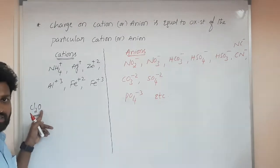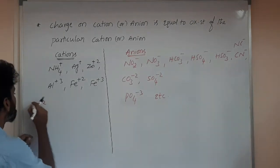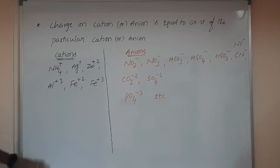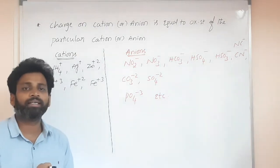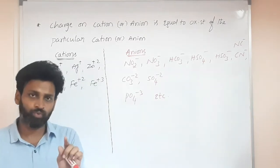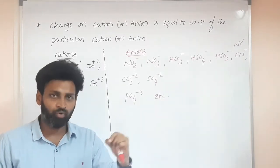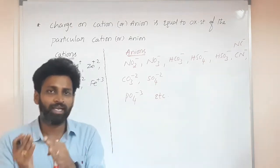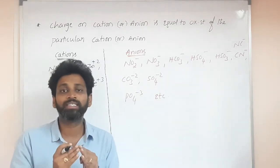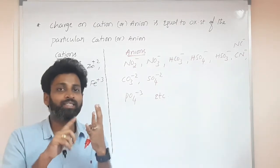Oxygen's electronegativity value is 3.5, so oxygen has a minus two oxidation state, and each chlorine in Cl₂O has plus one. The general oxidation state of oxygen is minus two, because for elements from group five onwards, it is group number minus eight — oxygen is in group six, so six minus eight equals minus two. Oxygen exists in three forms: oxide, peroxide, and superoxide.